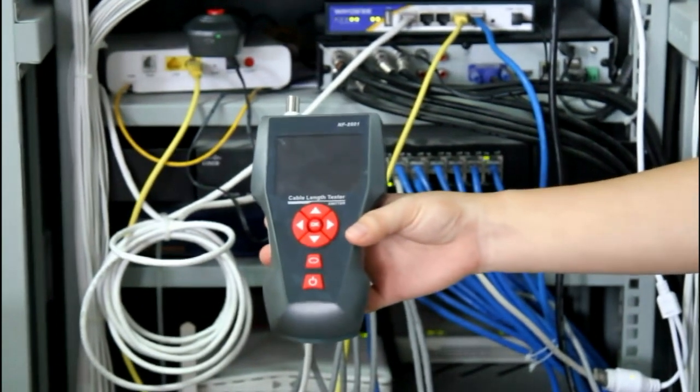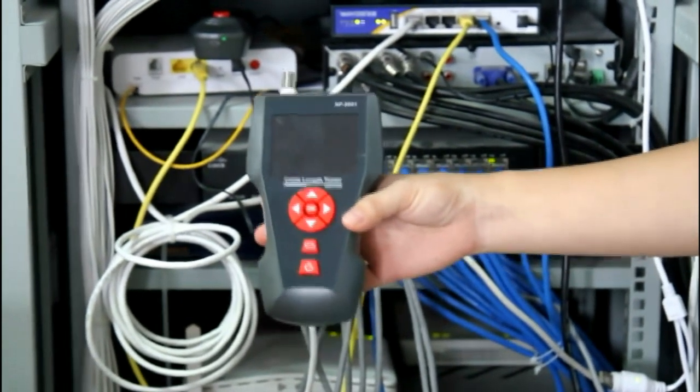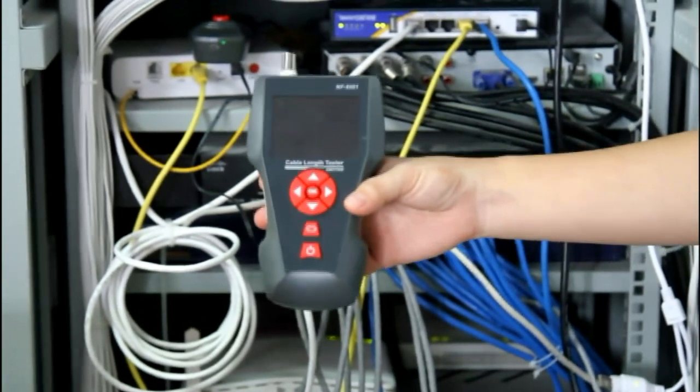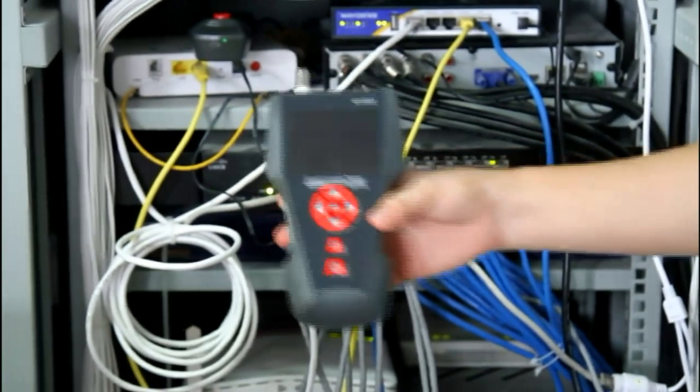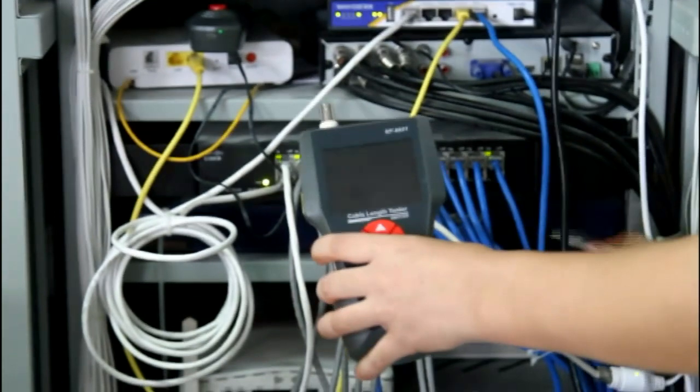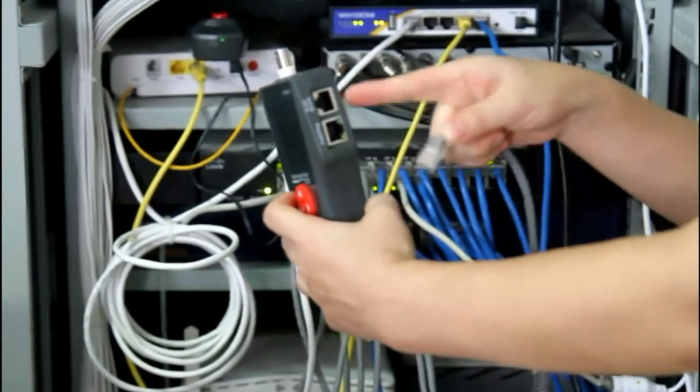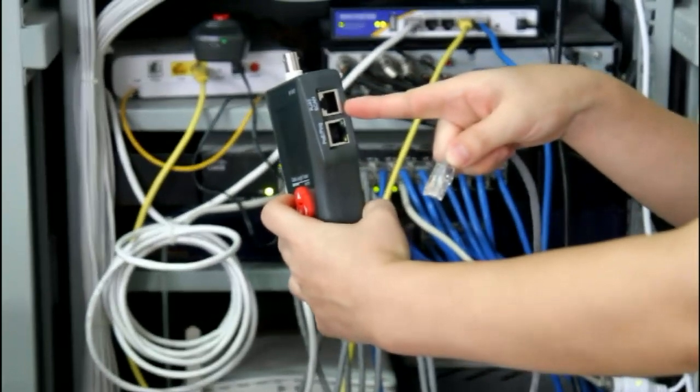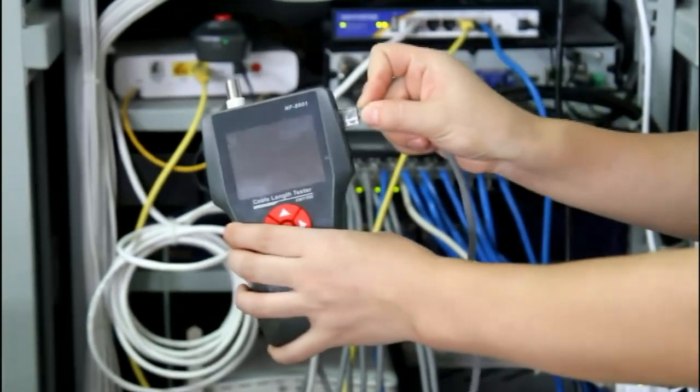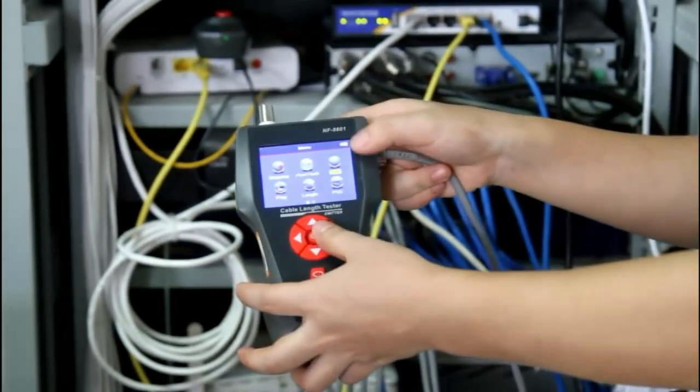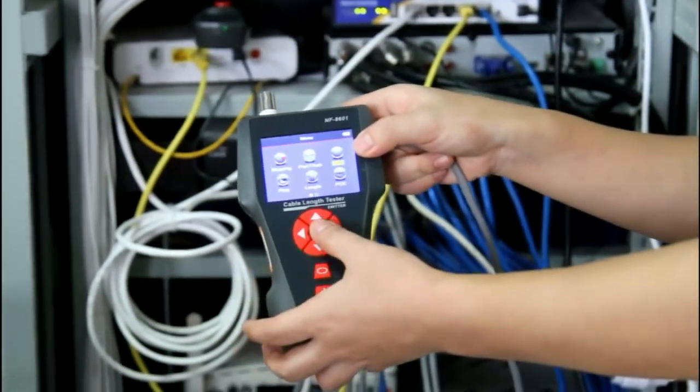Now we are in our cabling room. I'll show you how to trace cable connected to a switch. Let's choose one cable from the switch and insert the end to RJ45 scan port. Then we choose the scan function from the menu.